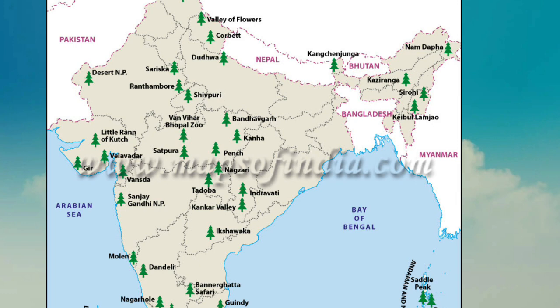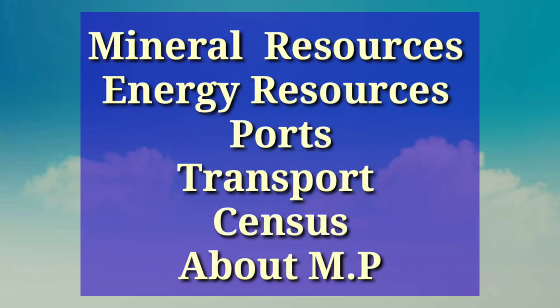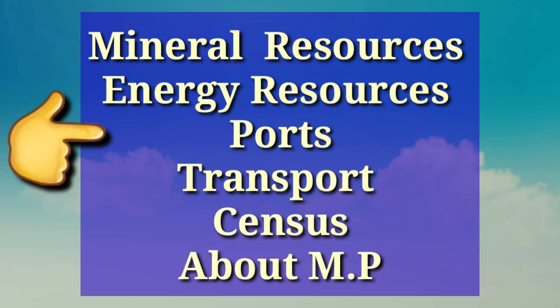This map gives you an account of the national parks, wildlife sanctuaries and bird sanctuaries in India, so have a close look at it. In the next video on geography, we will cover mineral resources, population, the largest and smallest states of India, conventional and non-conventional sources of energy, transportation, agriculture and the census of India. Subscribe to our channel and keep watching Study Track.